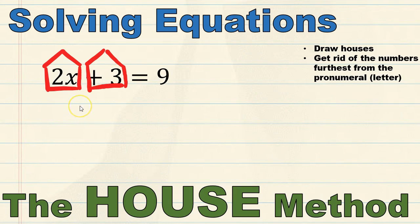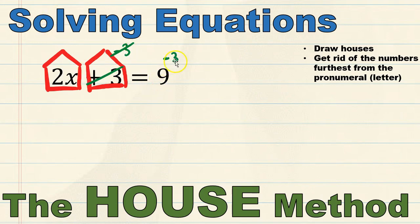We're going to perform the opposite operation. What is the opposite of plussing 3? The opposite of plussing 3 is to minus 3. Remembering that when we perform an operation on the left side of the equal sign we must perform the same operation on the right side. So I also need to minus 3 from the 9. Whenever you perform opposite operations they cancel each other — the plus 3 and the minus 3 cancel each other. Then 9 minus 3 gives us 6, so we write 6 below. We didn't cross out the 2x so we write that below as well.